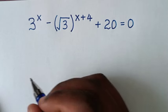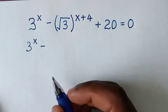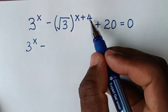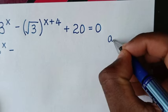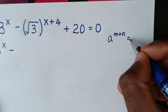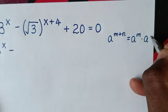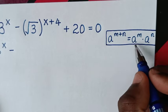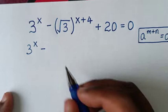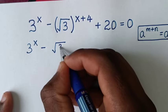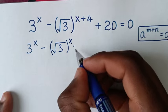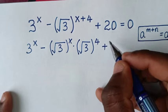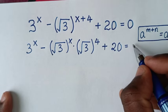Now, solution. We have 3^x minus (√3)^(x+4). This is in the form of the exponential rule, which is a^(m+n) = a^m times a^n. We will apply this form here, so it becomes √3^x times √3^4, then plus 20 is equal to 0.